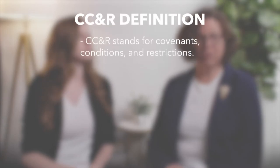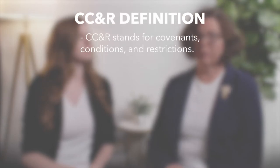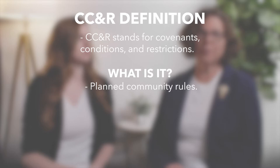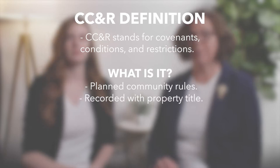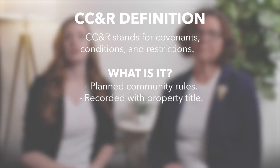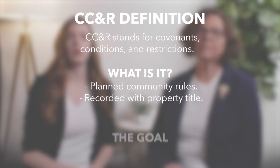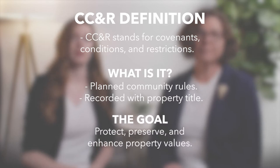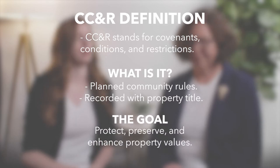CCNR stands for Covenants, Conditions, and Restrictions. Basically, the rules of a planned community — they're recorded with the title of your property. They are attached to your property the same way as a utility easement. The goal of the CCNRs is to protect, preserve, and enhance the property values in the community.